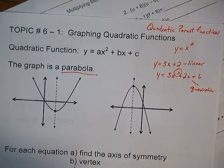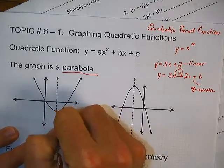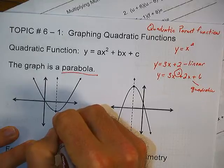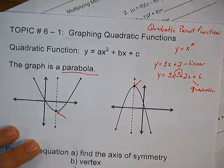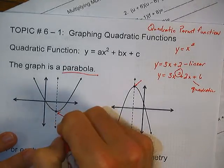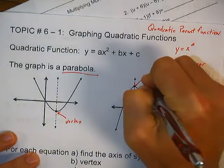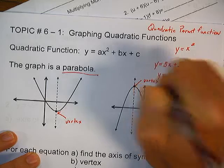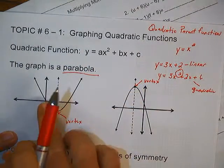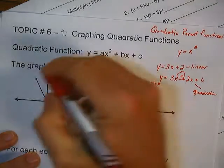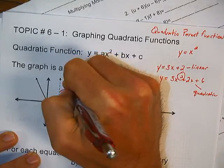Now we're going to talk about several different things on a parabola. First of all, there's a point at the lowest point of the parabola, and on this one it's the highest point of the parabola. This point at either the very bottom or the very top of the parabola is called the vertex. Now, this imaginary line that splits the parabola in half — there's a mirror image on both sides — this is known as the axis of symmetry.